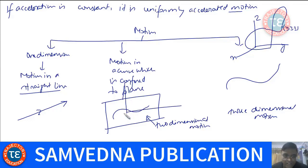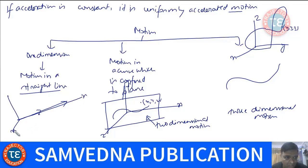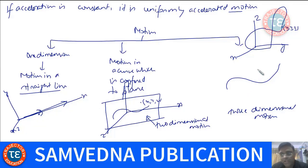You need three coordinates. If all the three coordinates change with time during the motion, we say it is three-dimensional motion. If only X and Y coordinates change with time and the Z coordinate remains constant, it is two-dimensional motion. If only one coordinate changes with time, it is one-dimensional motion. That is what we mean when we say one-dimensional, two-dimensional, or three-dimensional motion.